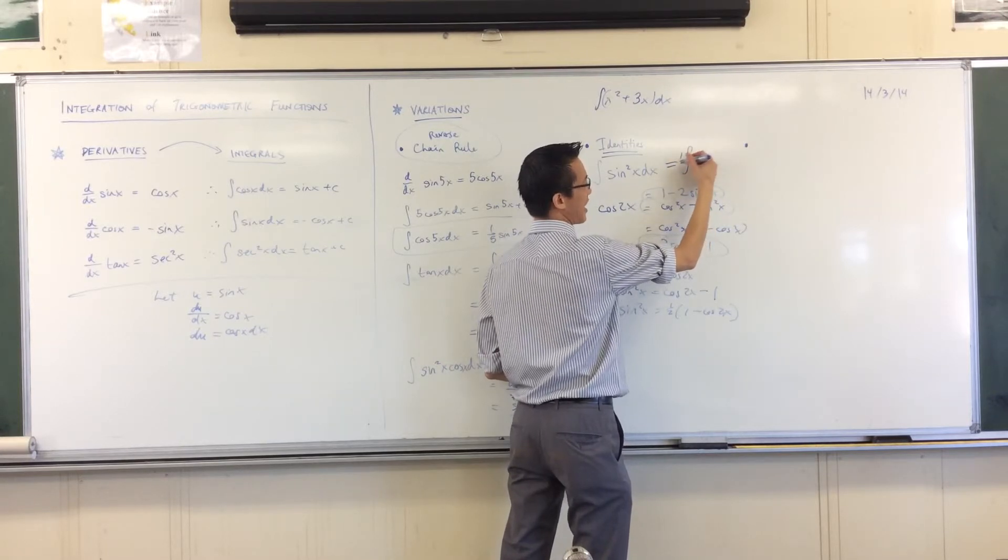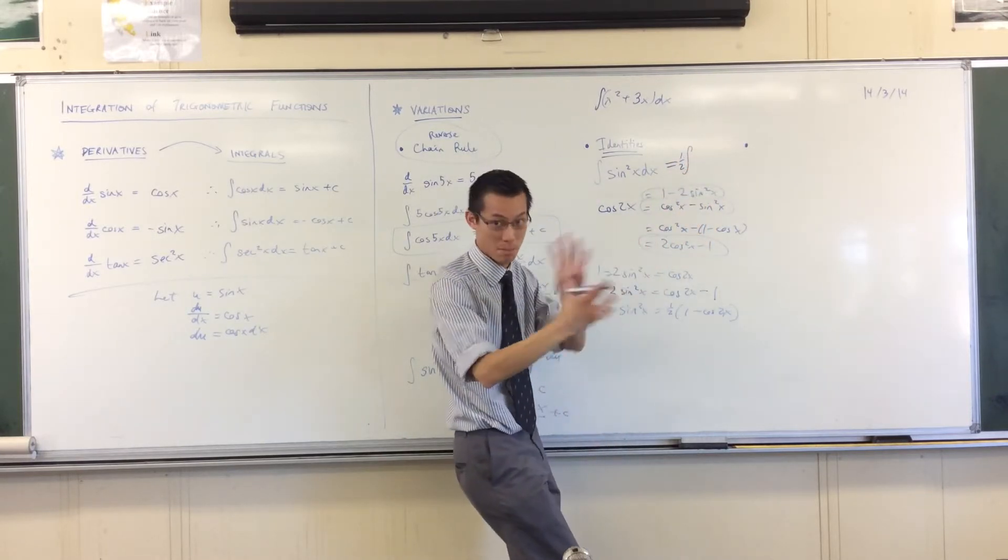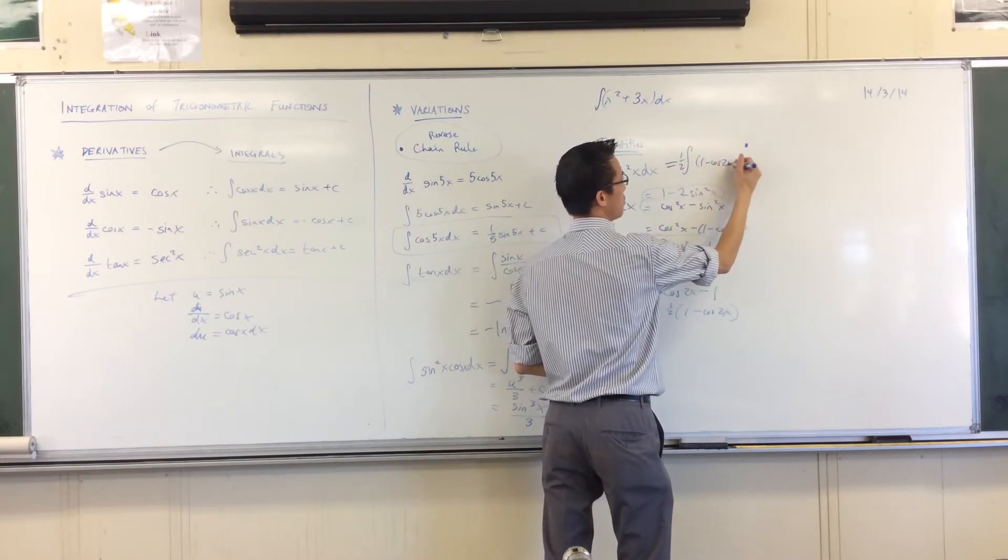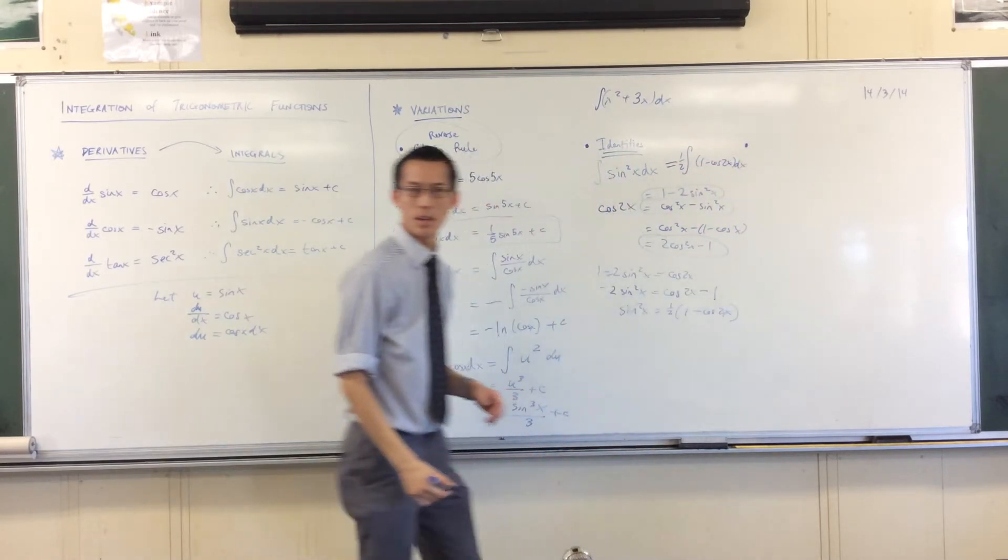I've got that half. I'm going to stick it out the front because as a constant doesn't matter where I put it. And then I've got my 1 minus cos 2x there. Is that okay?